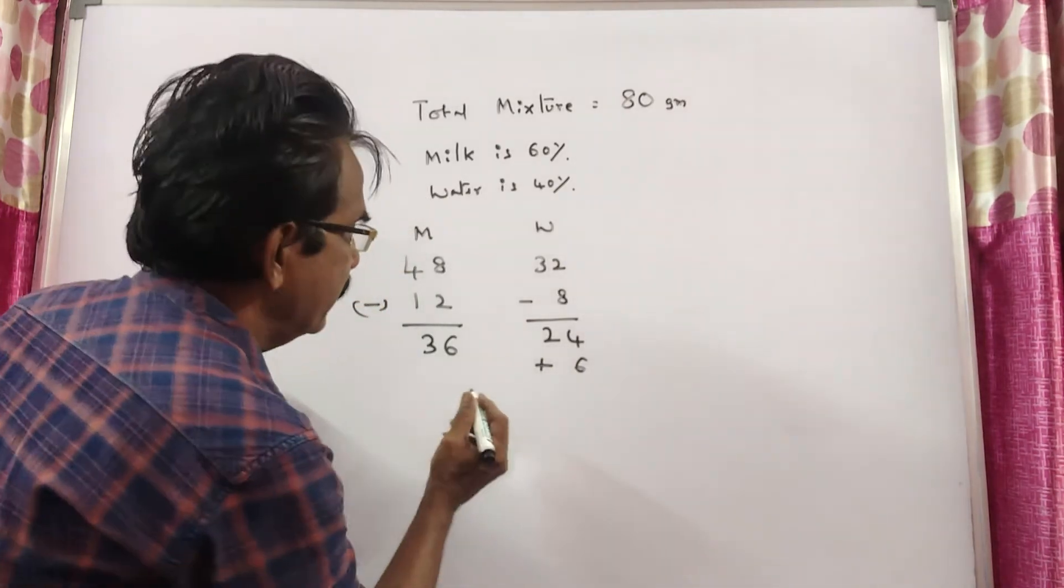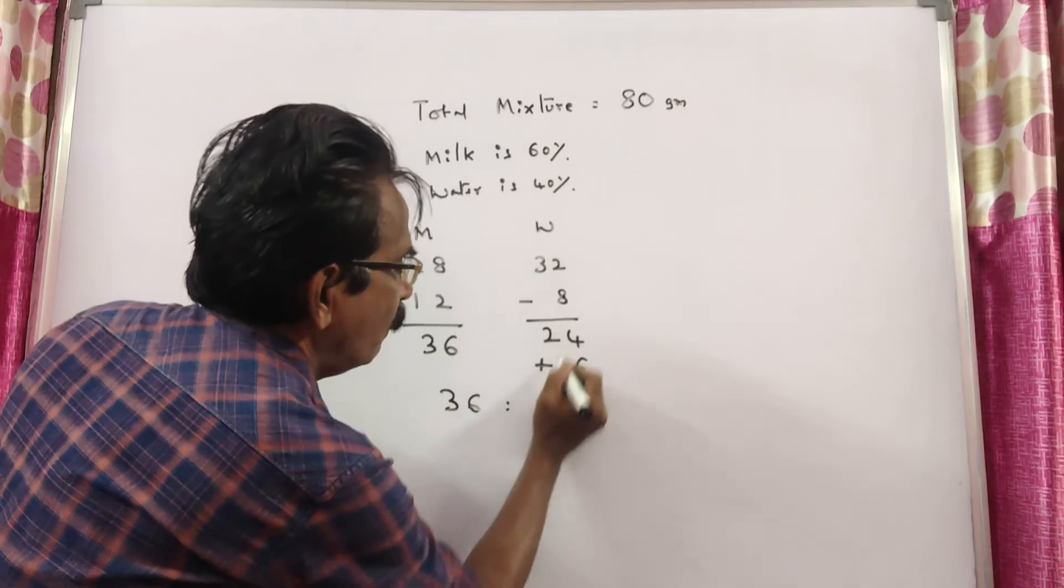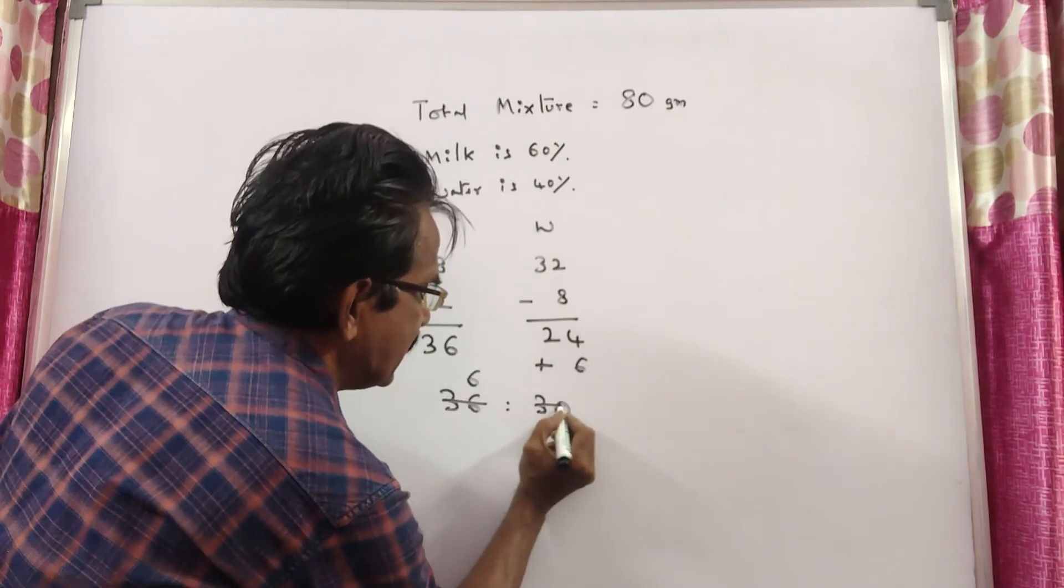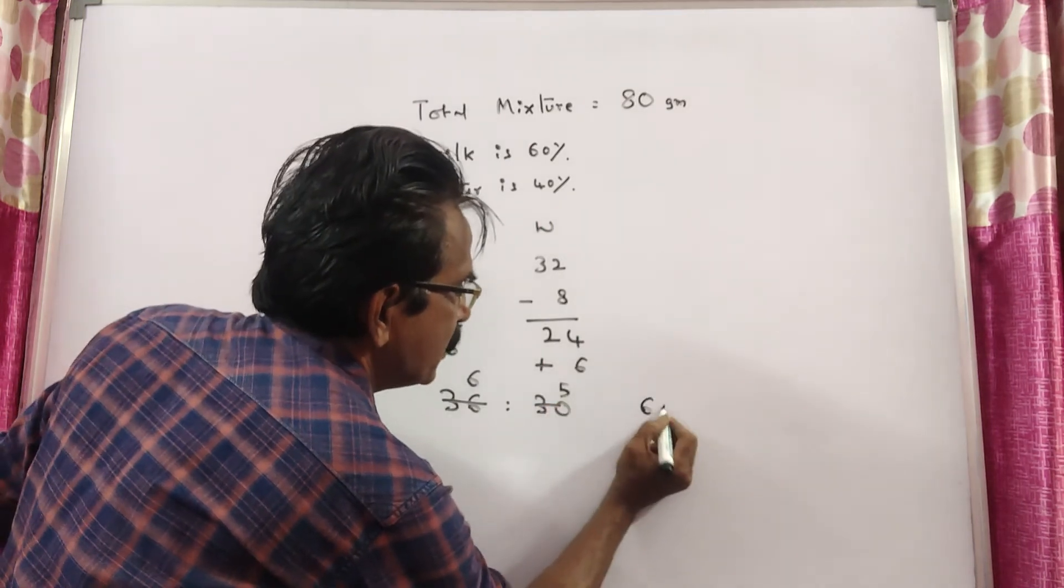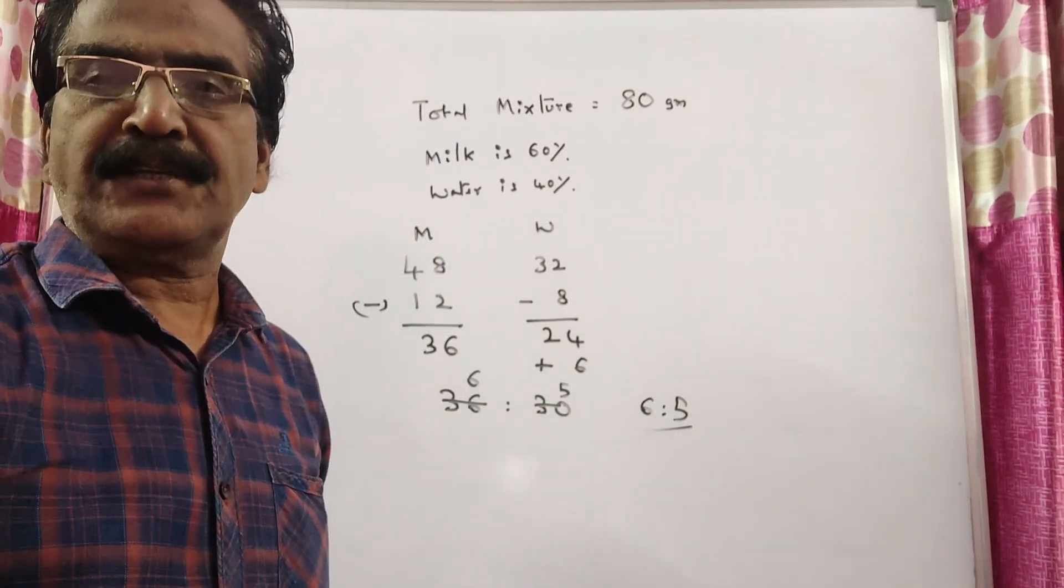In the final resultant mixture, milk is 36, water is 30. So the ratio is 6 to 5. 6 to 5 is your answer, friends. Okay, thank you.